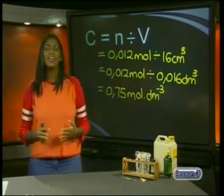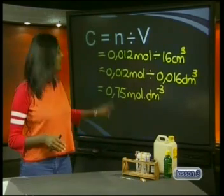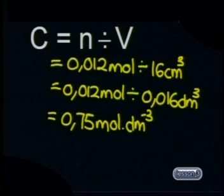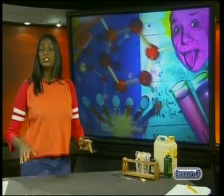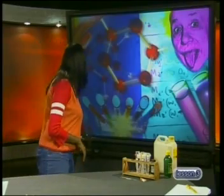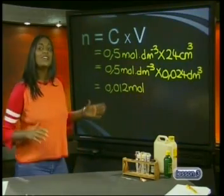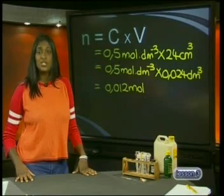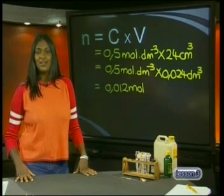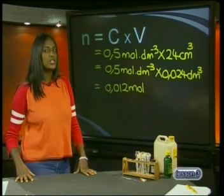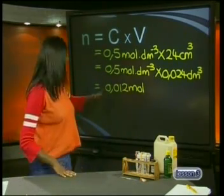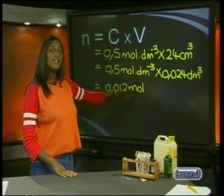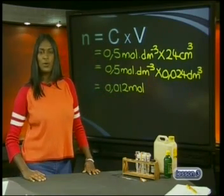Here we have found the concentration of the sodium hydroxide, and our task is complete. Now, a titration can also be used to prepare salts. If we look at our calculation from the task we have just completed, we can see that this titration should yield exactly 0.012 mol of sodium chloride.